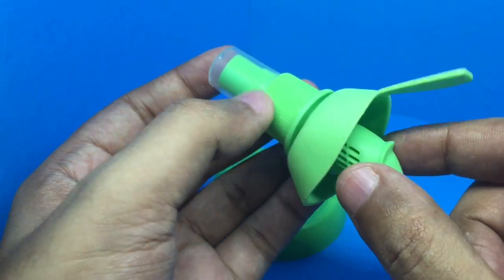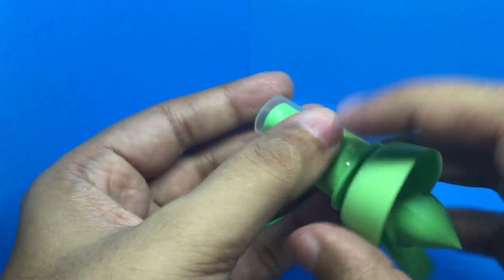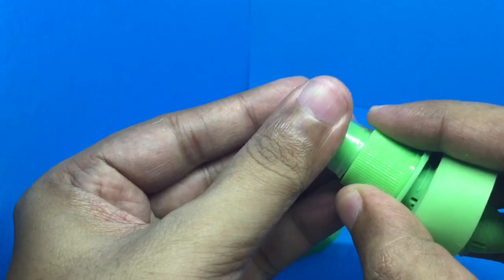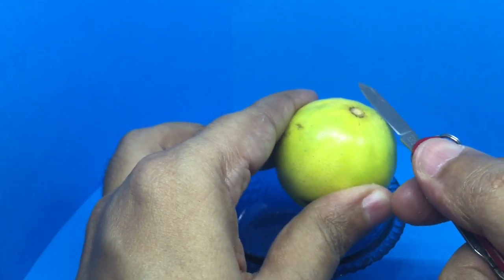This goes inside the lemon. You just twist it in, and this covers the lemon and gives it the pressure. You take a lemon and cut the top part off.